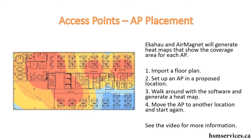So you have this building and you need to cover the floor area with Wi-Fi. You don't know exactly how each wall or cubicle is going to interfere with the signal, and you can't just install APs and hope for the best — you have to plan this out very carefully. You can watch a video on AirMagnet that shows you exactly how to do that.